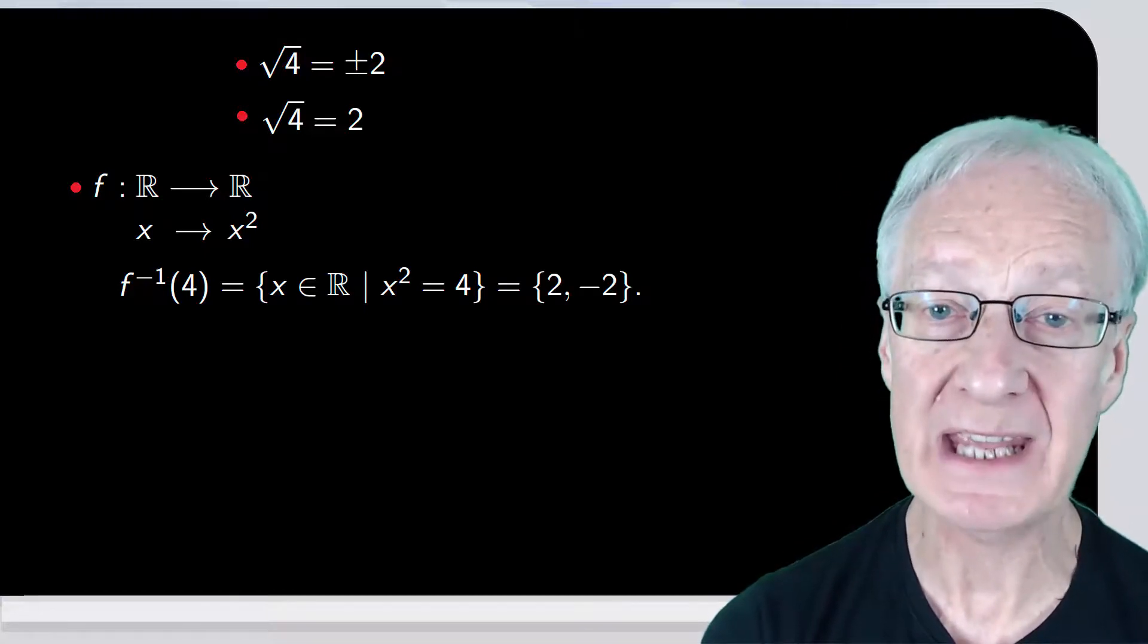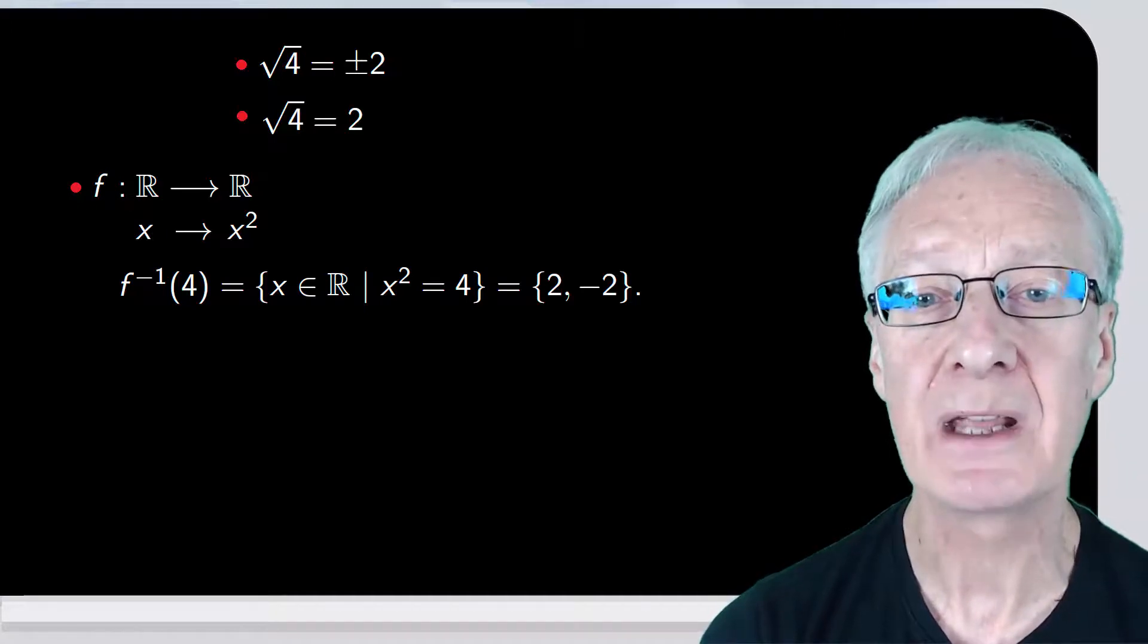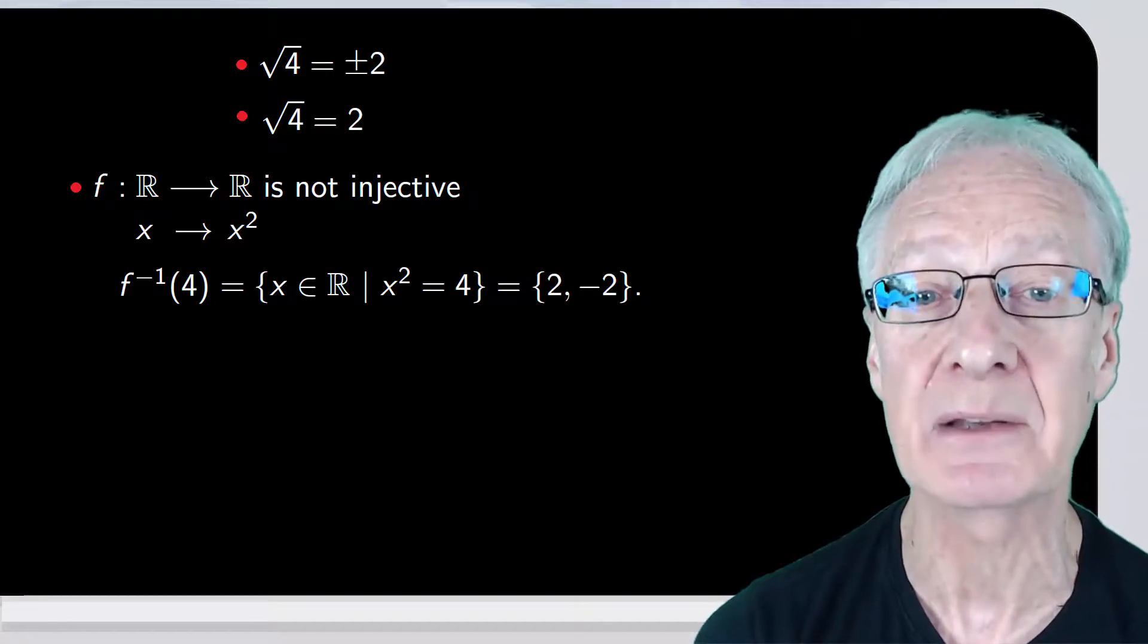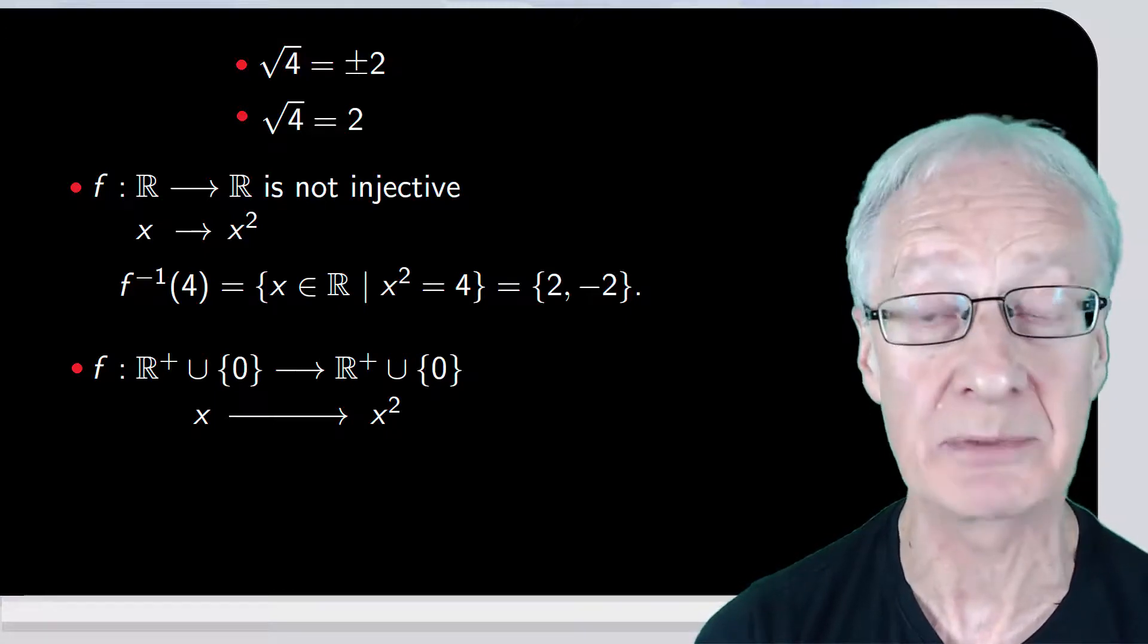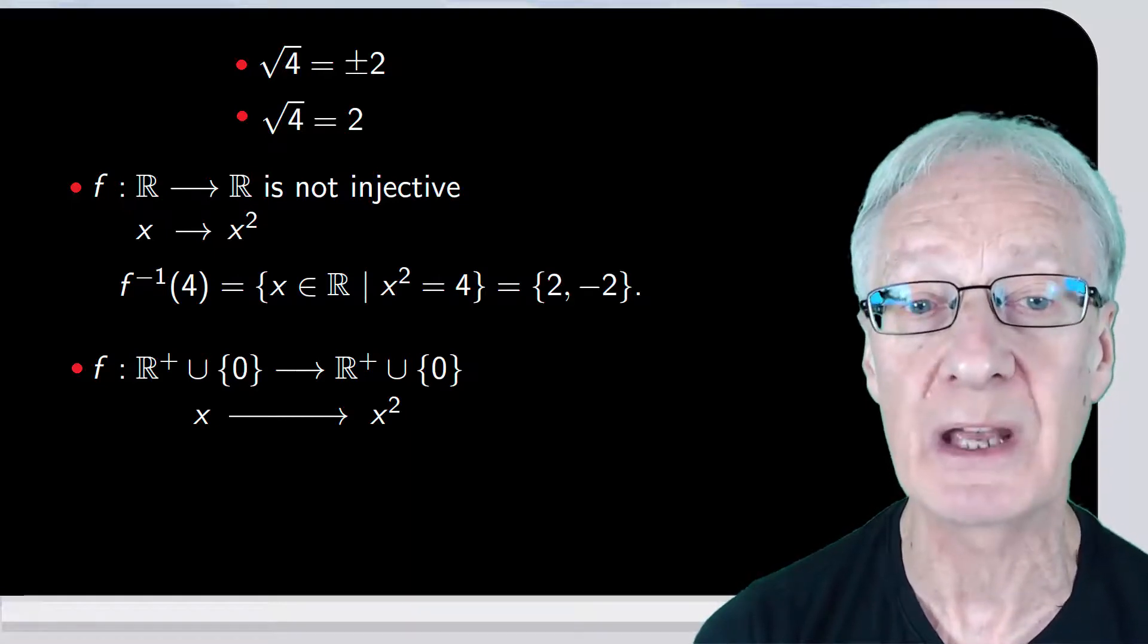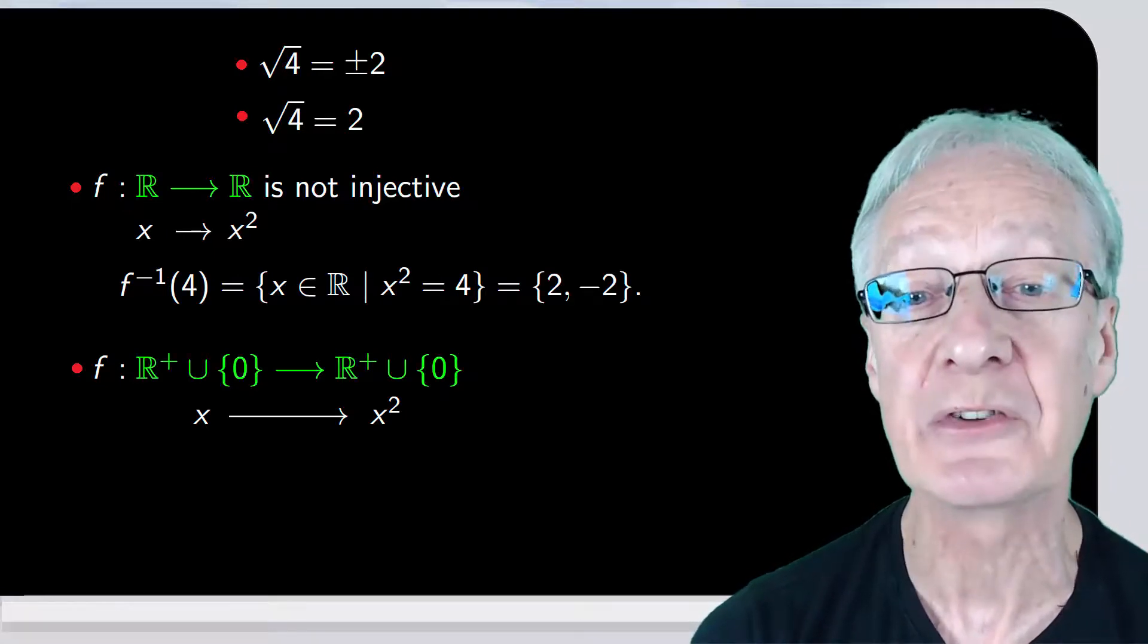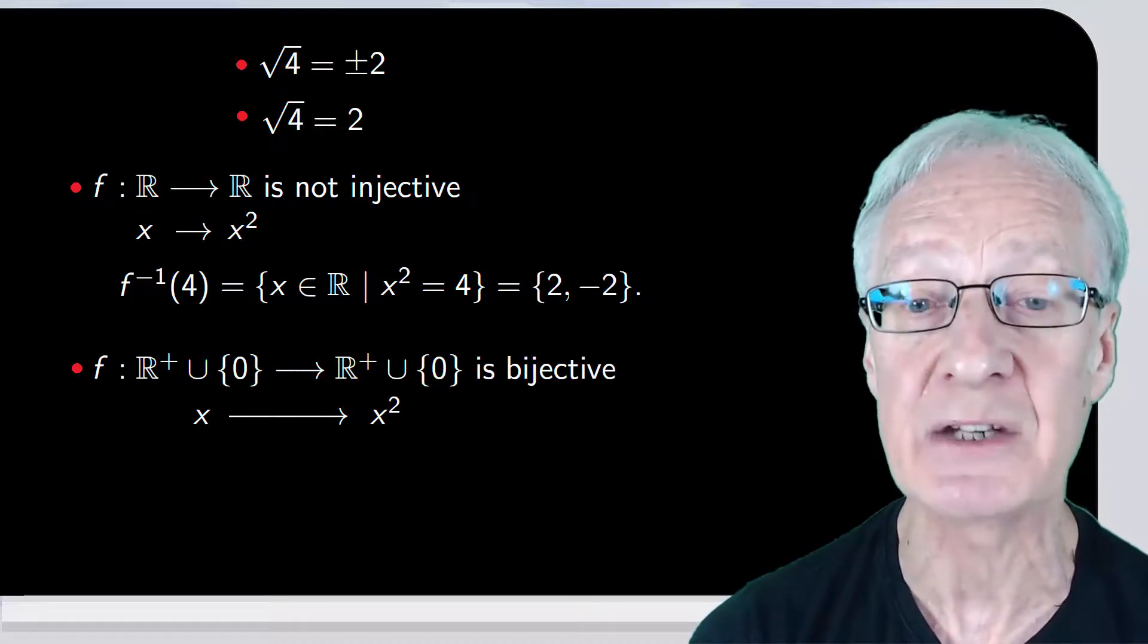We can also consider the inverse of a function, but for this the function has to be bijective. In our case, f isn't injective, but restricting the domain and the codomain, we can obtain a bijective mapping. For example, f defined from r plus union 0 to r plus union 0, such that the image of x is x squared. For simplicity, we'll also denote our function by f, but it's different from the previous one, since the domains and codomains are different.